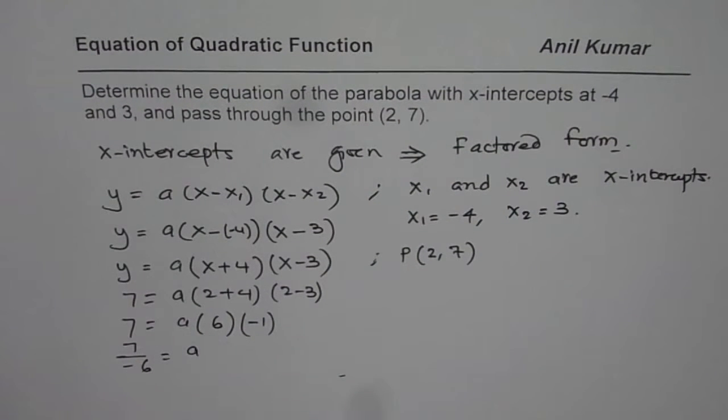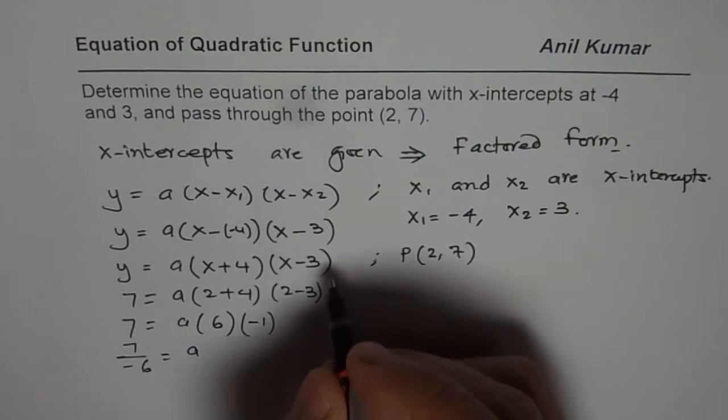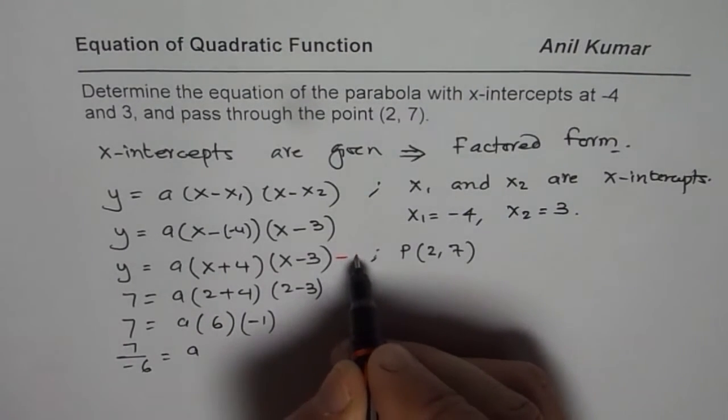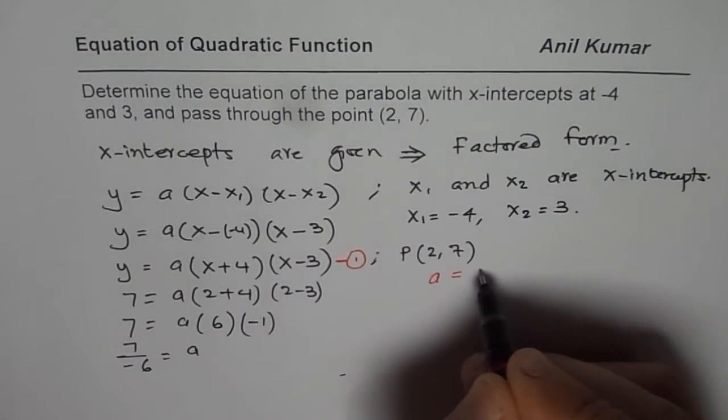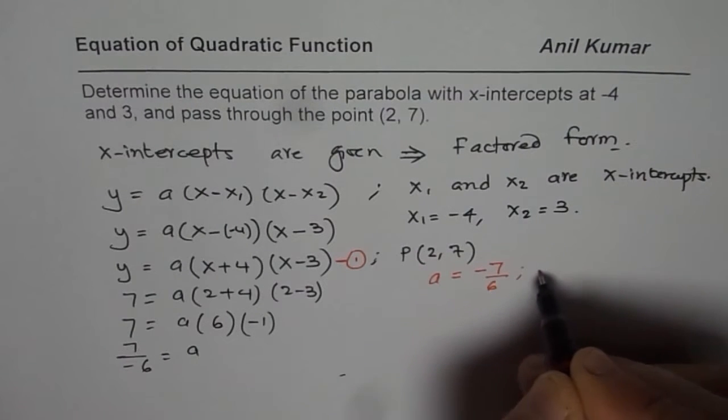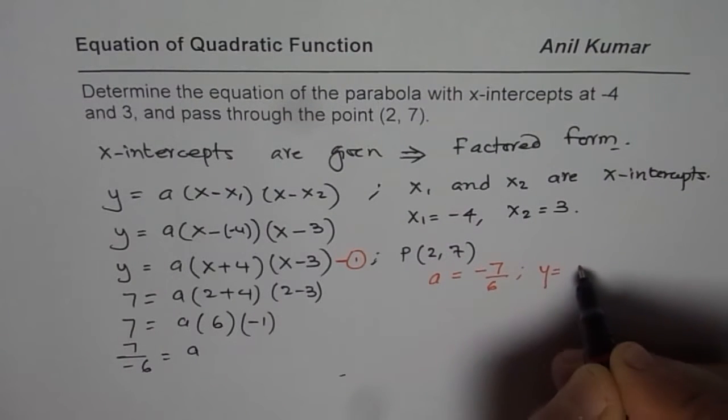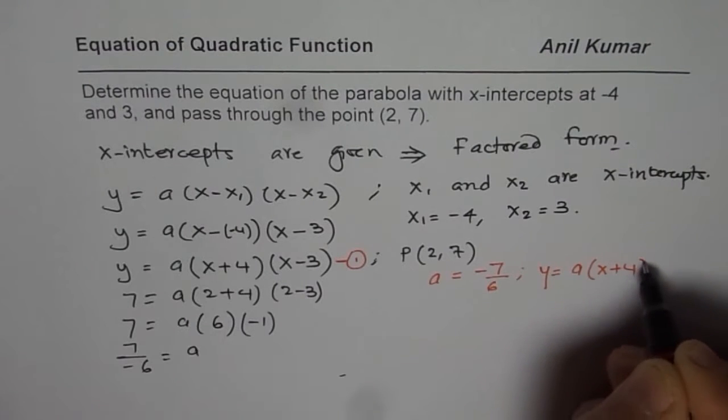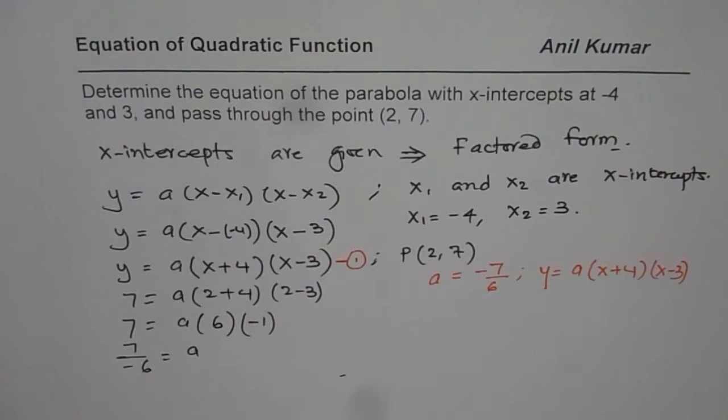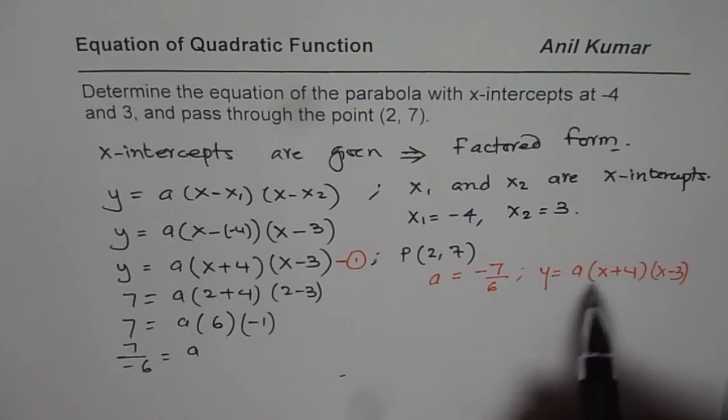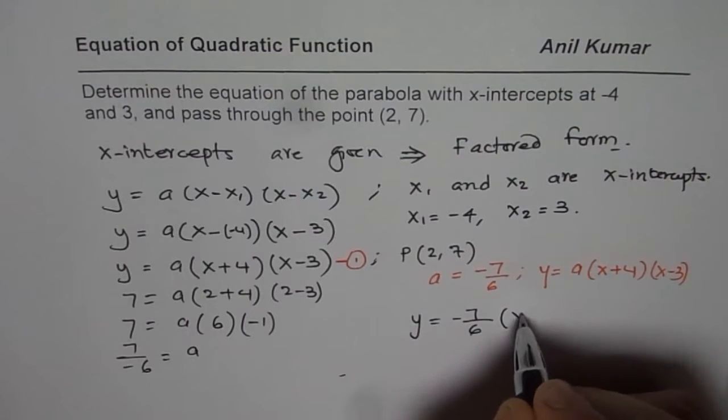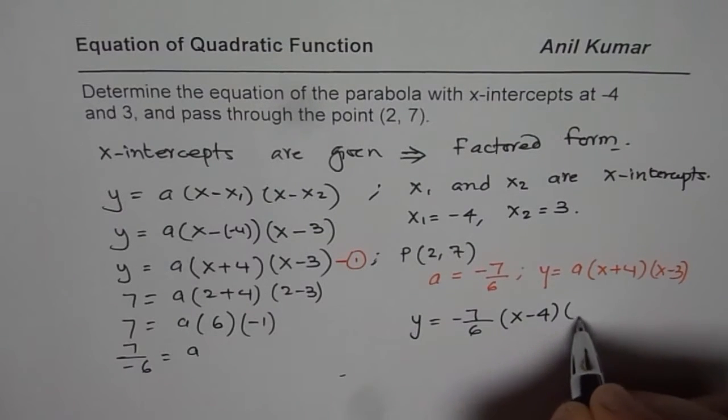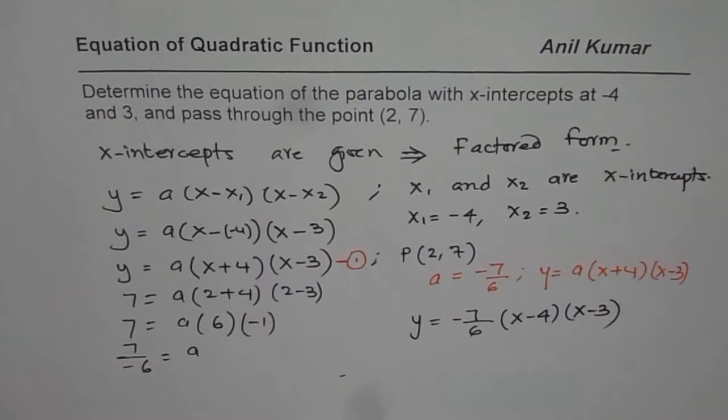Once you get the value of A, you can substitute it back into your equation which is right there. This is the equation which you are working on. So, now we know A equals minus 7 over 6 and the equation is y equals A times (x plus 4) times (x minus 3). So, substituting the value of A, we get our answer which is y equals minus 7 over 6 times (x plus 4) times (x minus 3). So, that is how we can write the equation in the factored form.